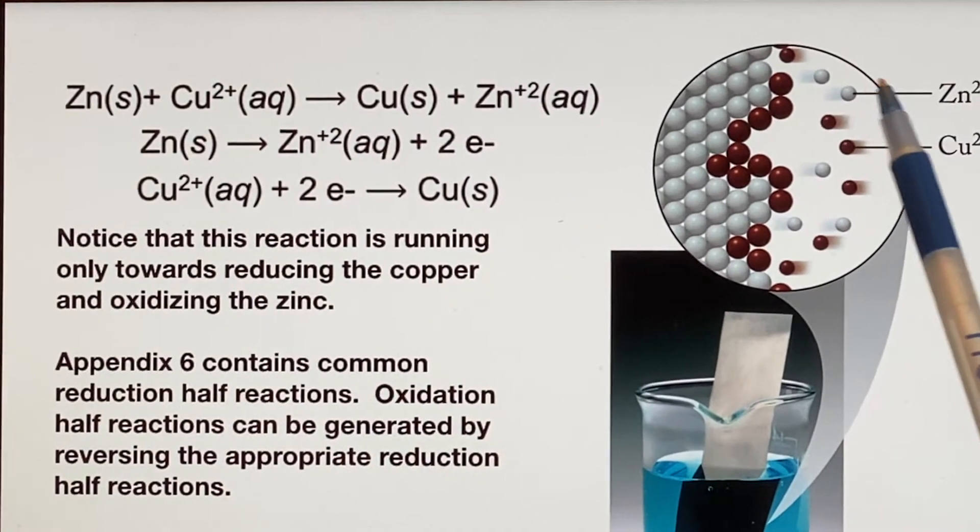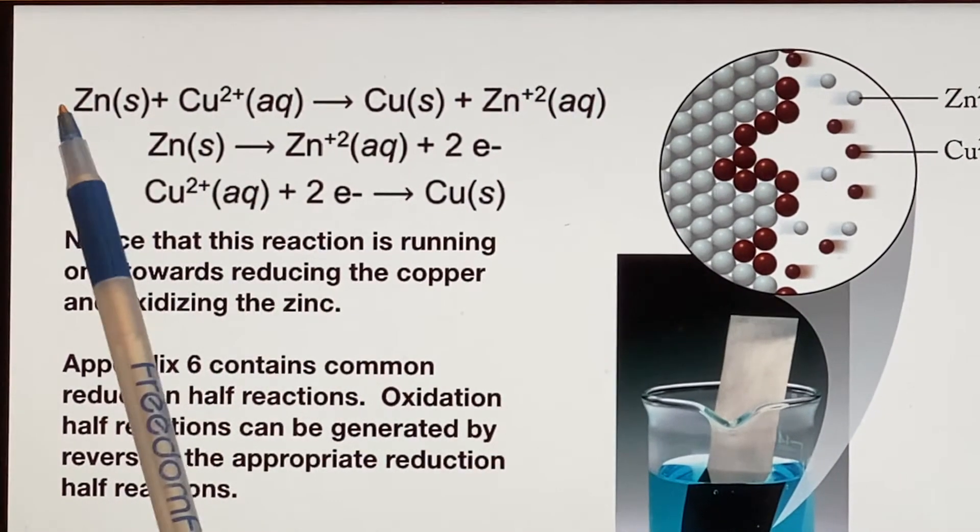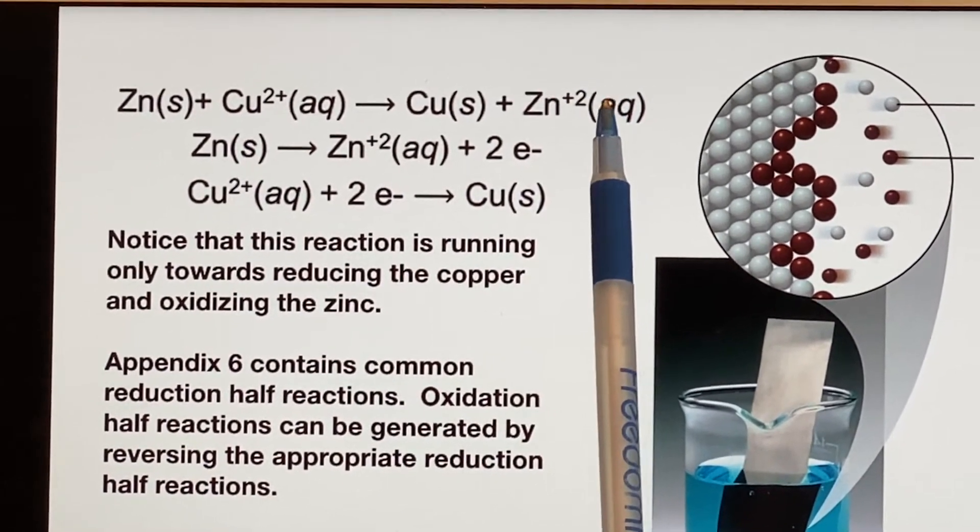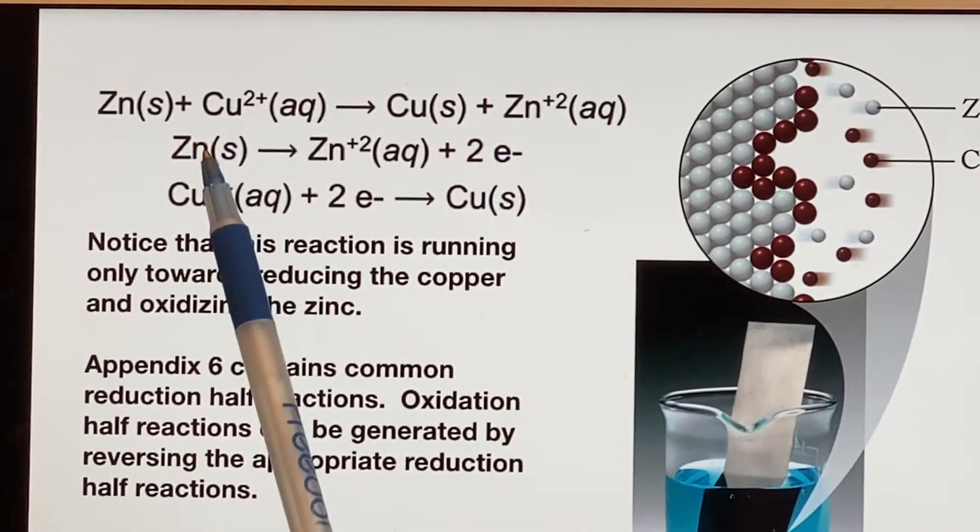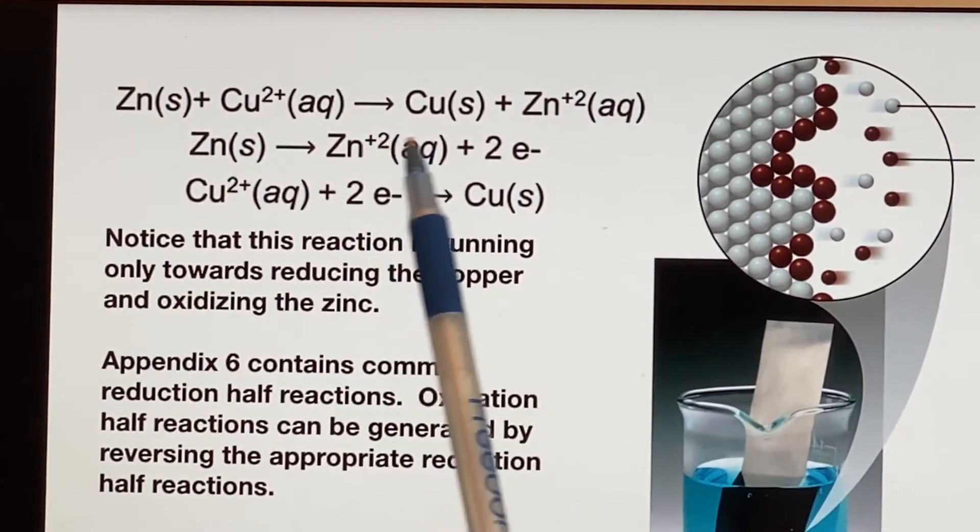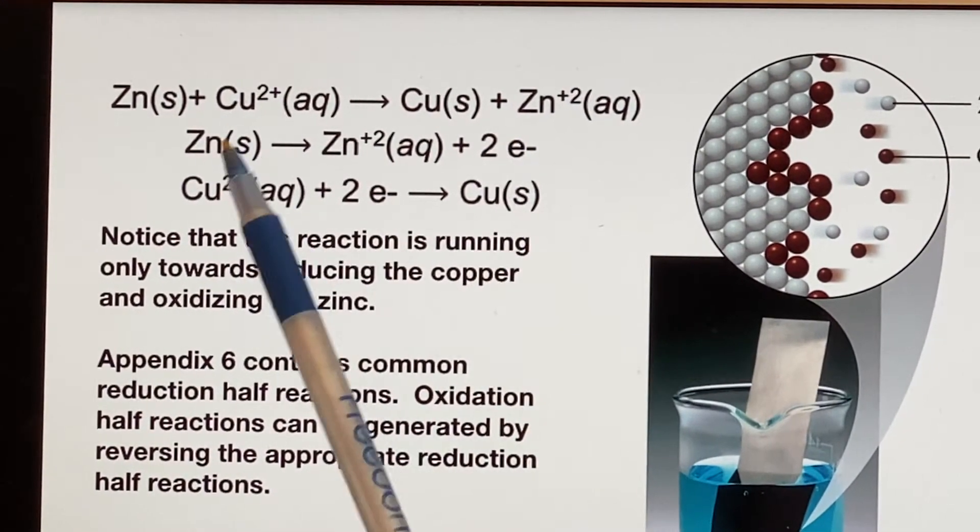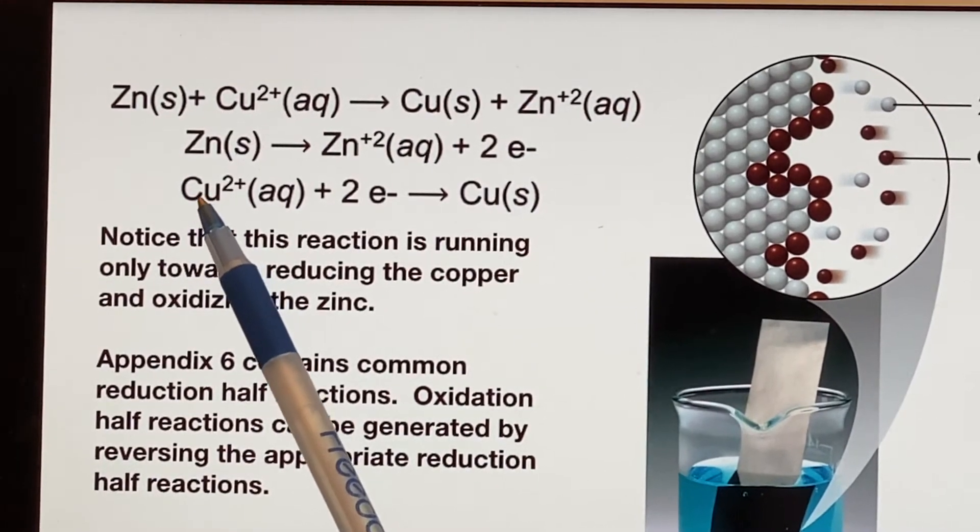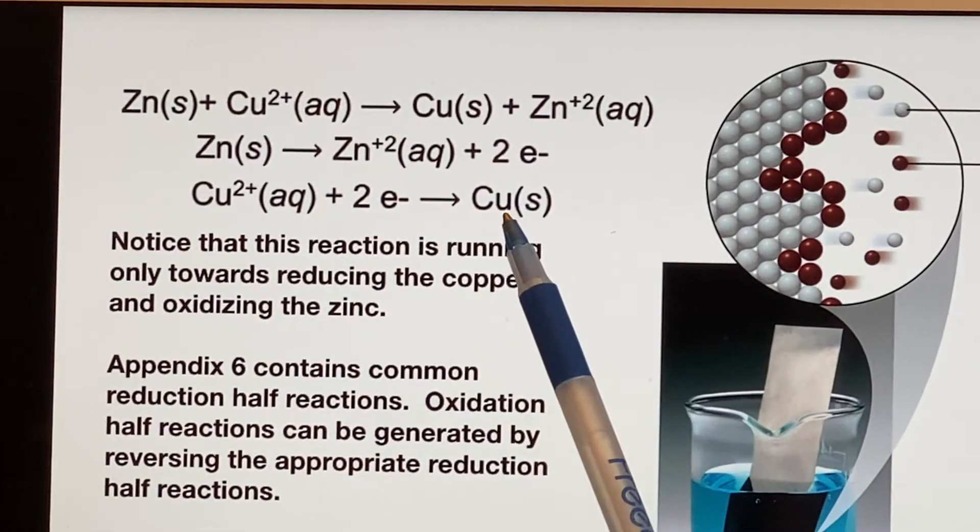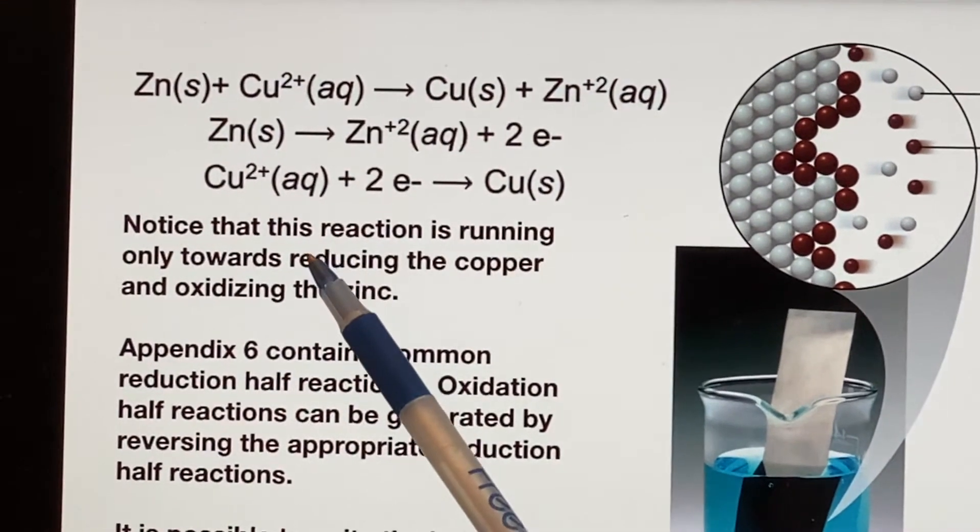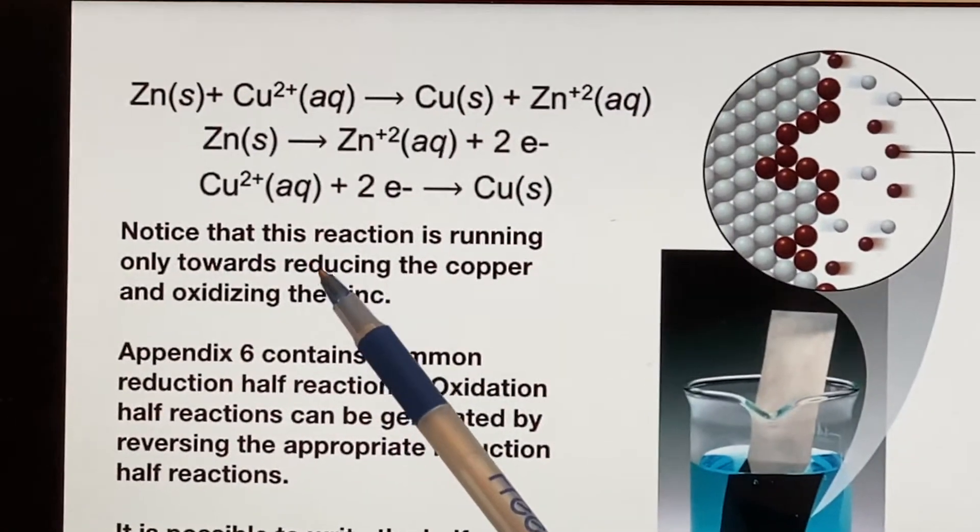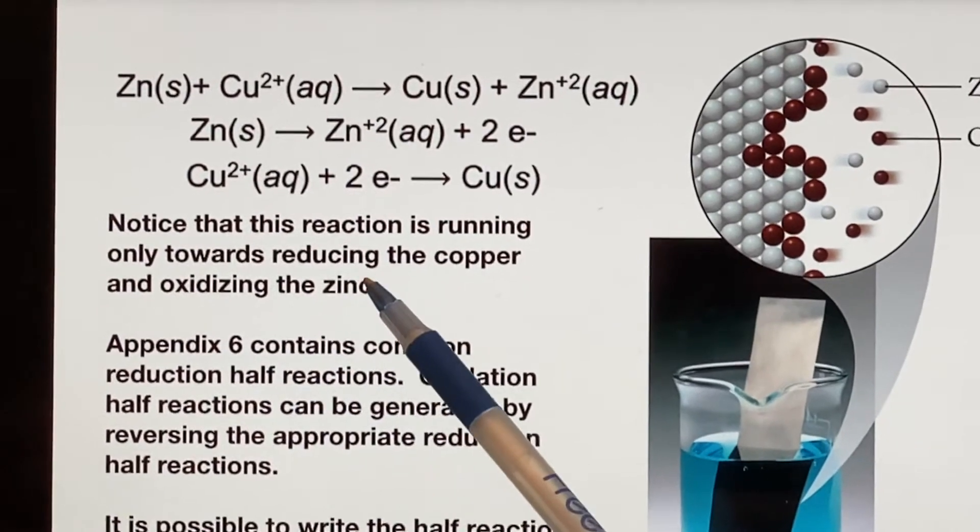This overall equation here, where we have completely ignored the sulfate because it's just a spectator ion, has two parts. It has the zinc becoming zinc with a charge and giving up electrons, and it has copper which was in solution and had a charge, picking up those electrons and becoming a solid with no charge. And it is running one direction. It is not an equilibrium. It is reducing the copper, it's oxidizing the zinc.